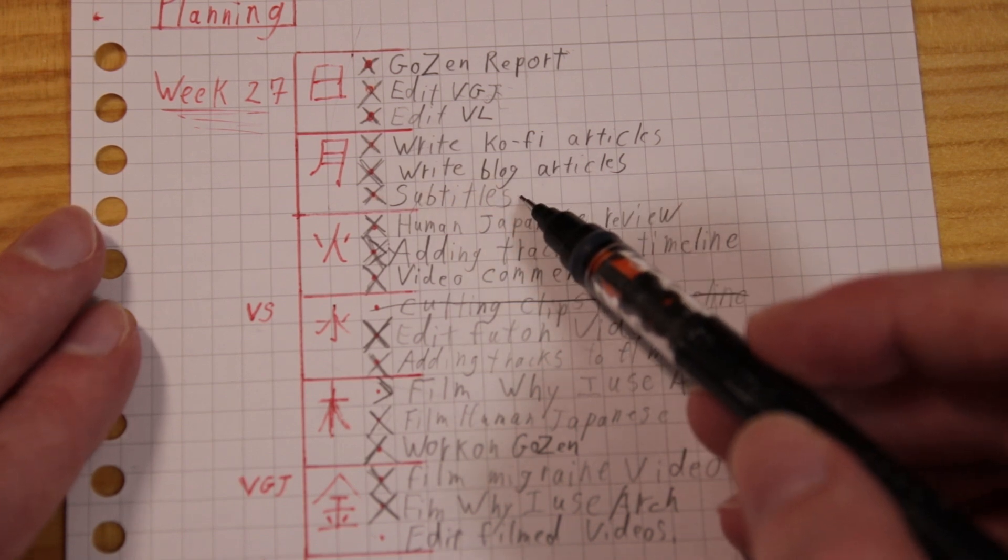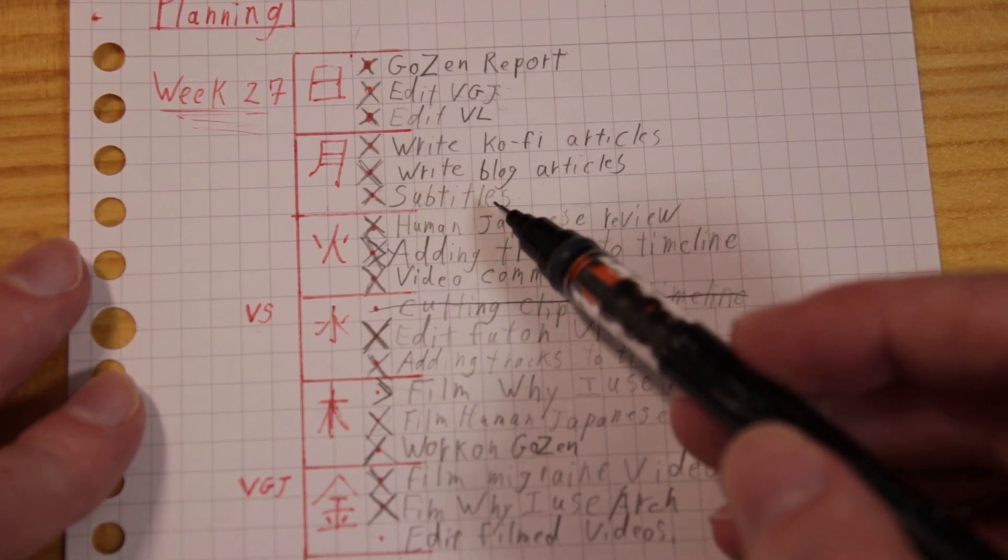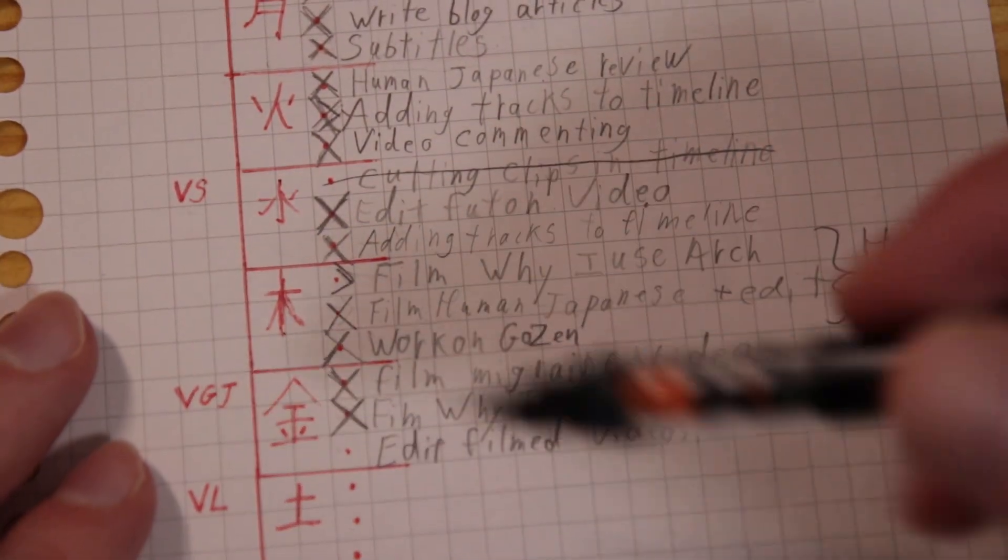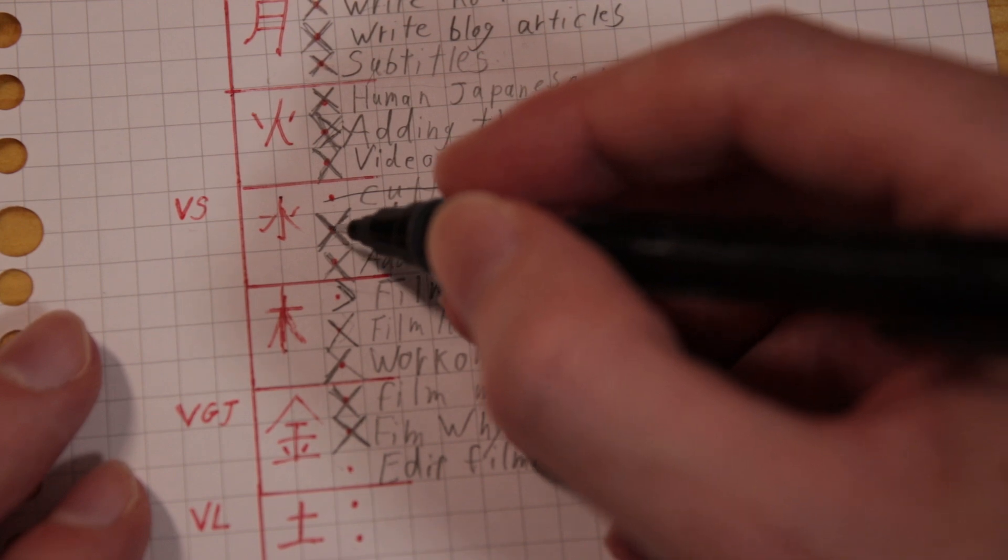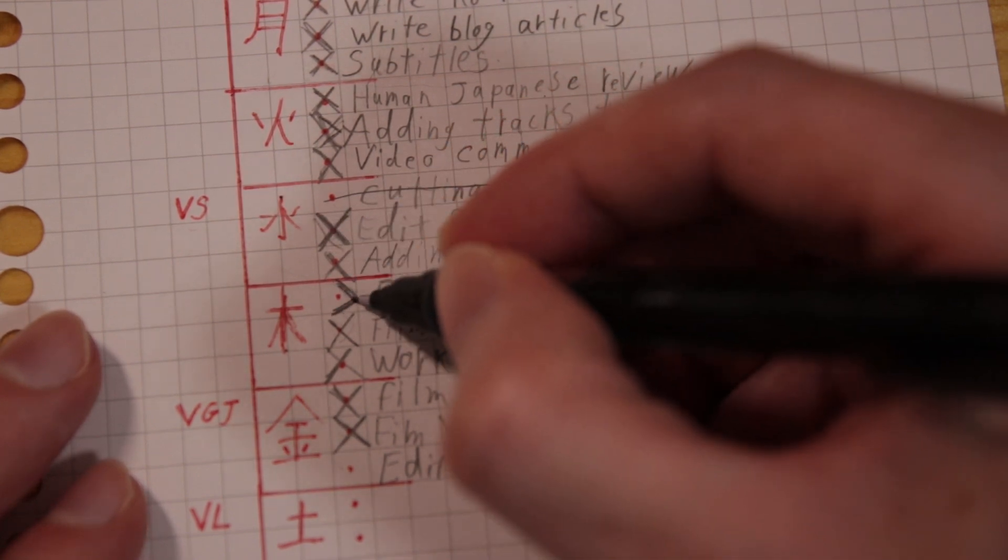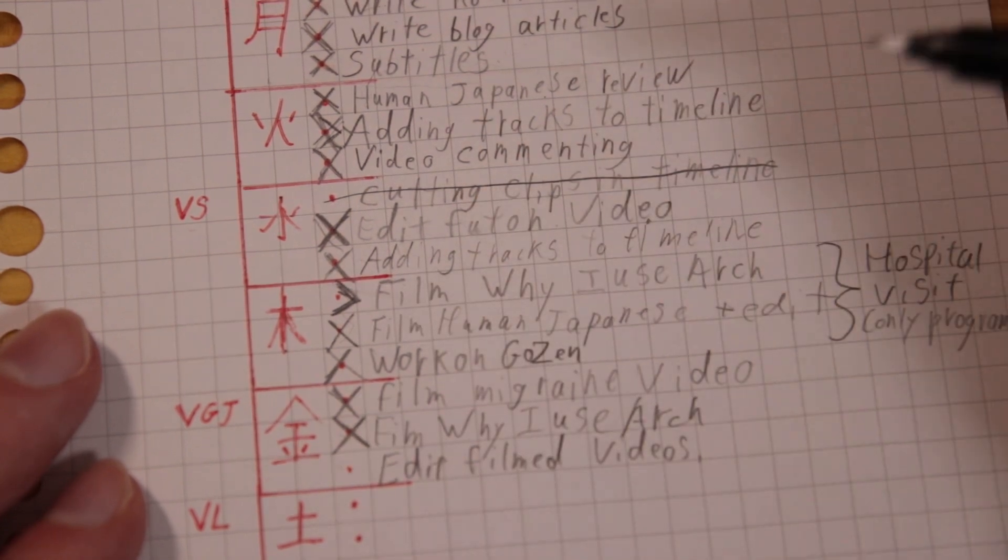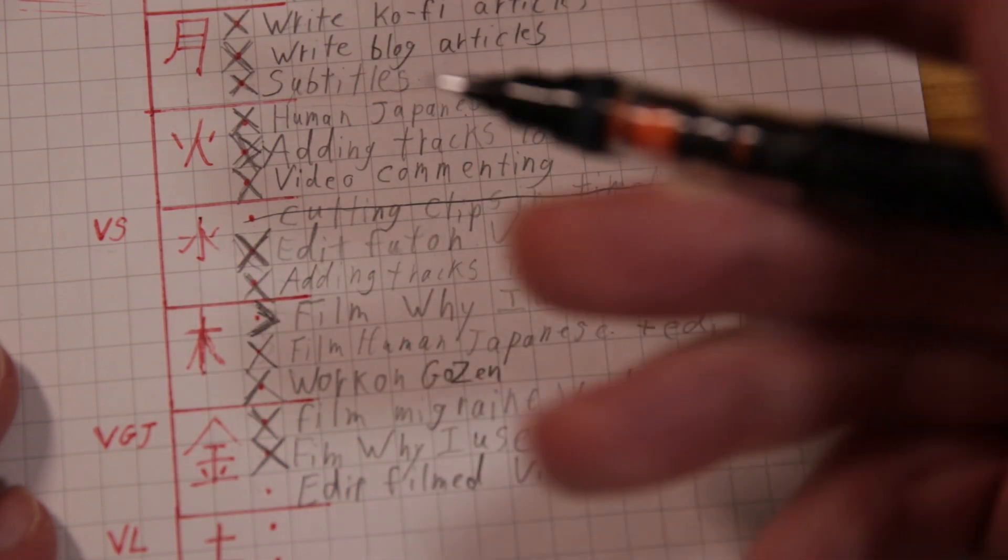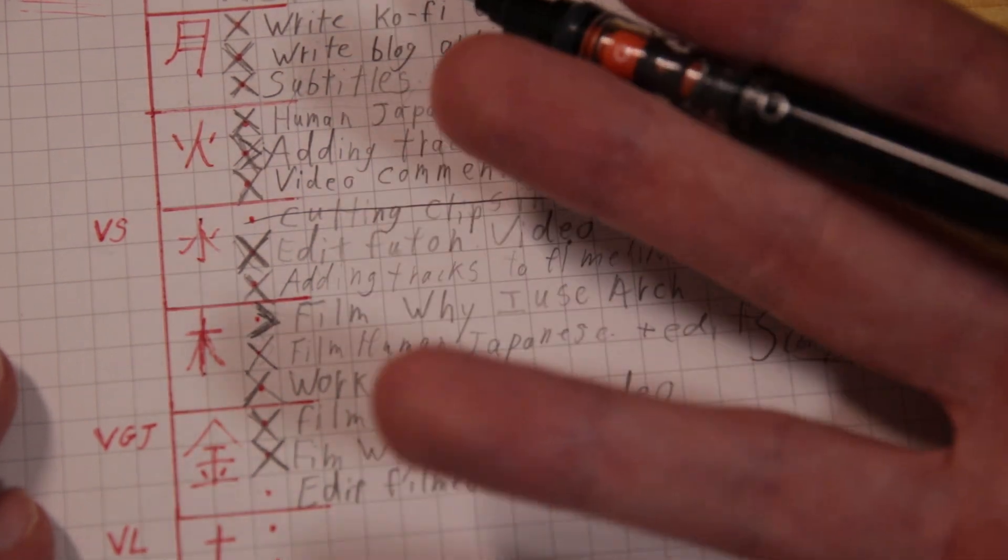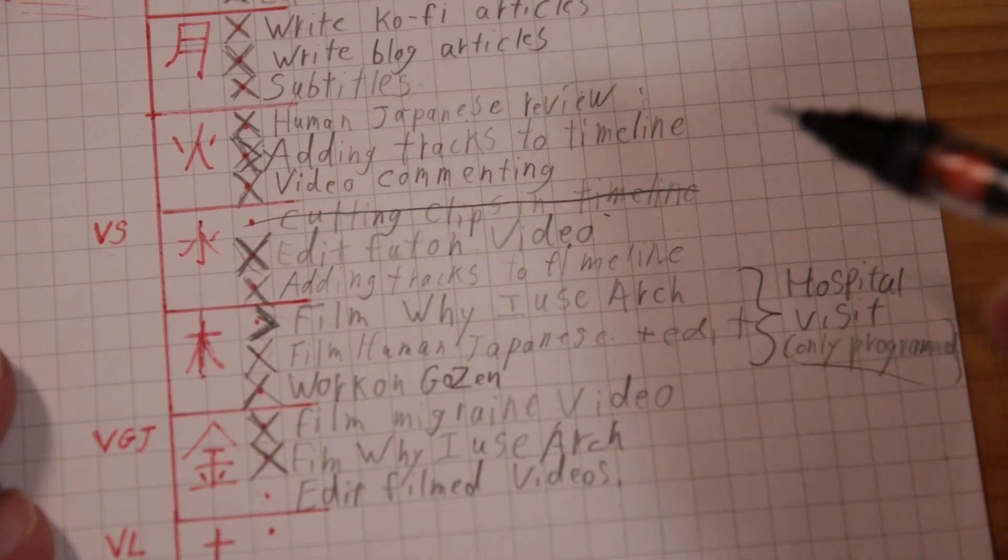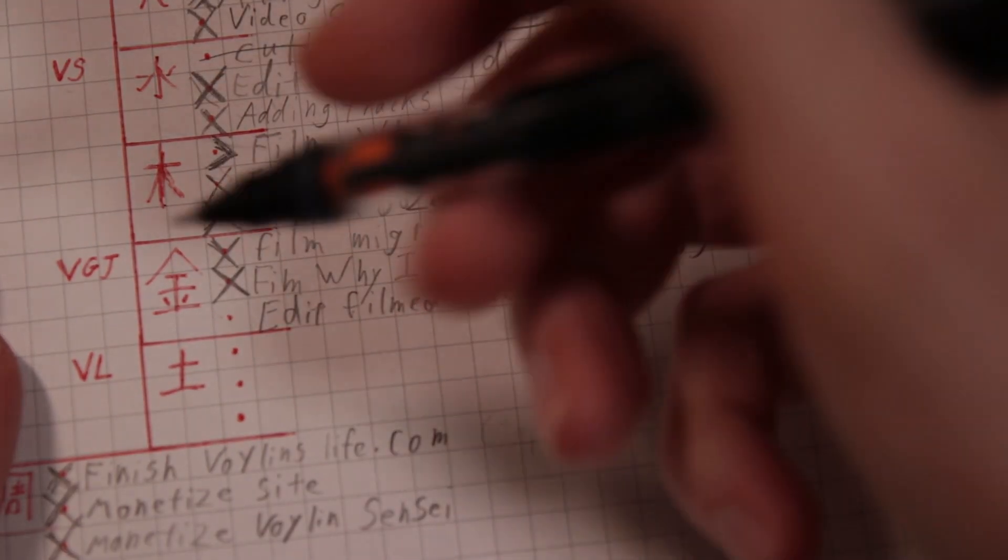And I had to add subtitles for a lot of videos because recently I started adding all subtitles to my videos again. This took a long time. You can basically go over this entire planning. But when you see an X like this, the task is finished. If you see an arrow, it's because I had to move the task because I wasn't able to finish. If I wasn't able to do something, I will move it to the next day, or if I really cannot do it because something is completely blocking it, I just cross it out completely.